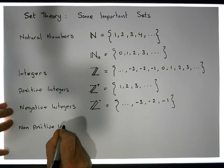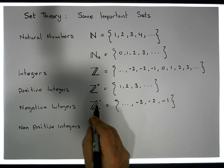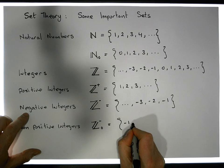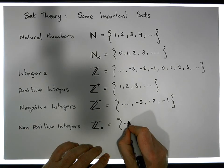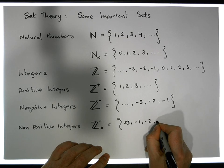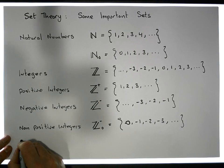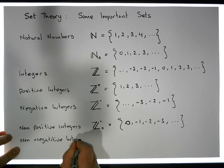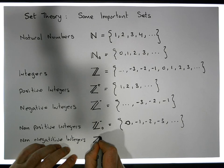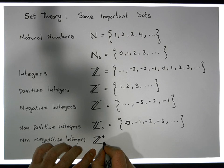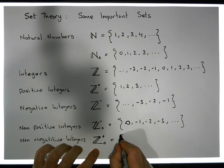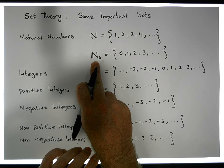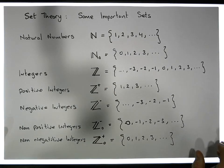The non-positive integers are the negative integers inclusive of zero, so they would be: zero, minus one, minus two, minus three, and so on. The non-negative integers are anything that's not negative — which is positive — and also zero, which is neither negative nor positive. So the non-negative integers are zero, one, two, three, and so on — essentially the natural numbers inclusive of zero.